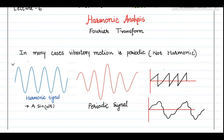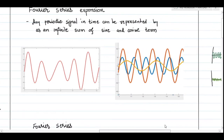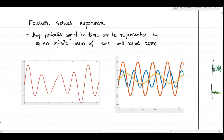Whenever we have such a periodic signal and we want to find the frequency components — which is always the primary goal when dealing with vibratory signals — we apply the Fourier series expansion. The Fourier series says that any periodic signal in the time domain can be represented by an infinite sum of different sine and cosine terms. For example, if I do the Fourier expansion of a periodic signal, I get different sine and cosine terms. Adding all three individual signals gives back the original signal — this is the basic philosophy of Fourier series expansion.